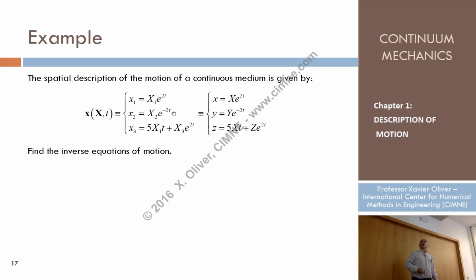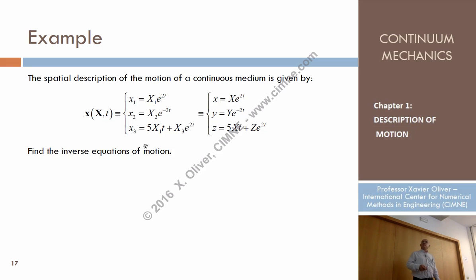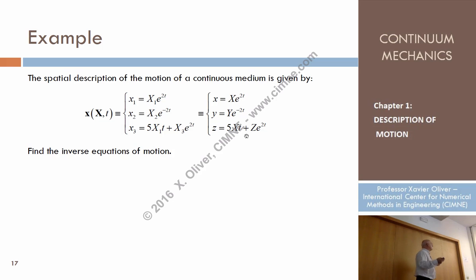So, for every particle, at every time, I obtain a set of different spatial coordinates. I will use this notation, or this notation, in which instead of x1, x2, x3, I use small x, small y, small z, or capital X1, X2, X3 are replaced by capital X. We will use both notations interchangeably.